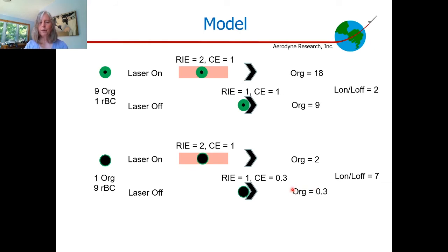We've developed a model to explain this. The basic point is that when you have very thin coatings and a lot of bounce on the tungsten vaporizer, that decreases what you measure at the tungsten vaporizer, so your laser-on to laser-off ratio gets much higher.